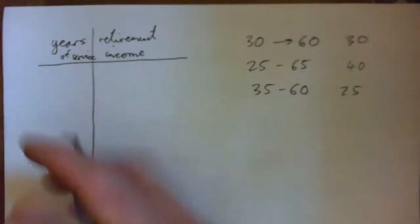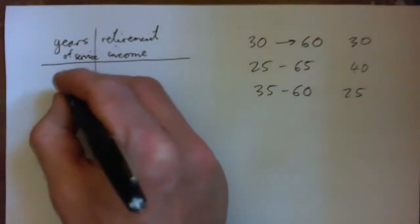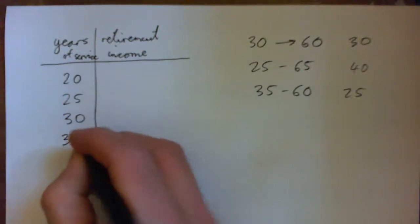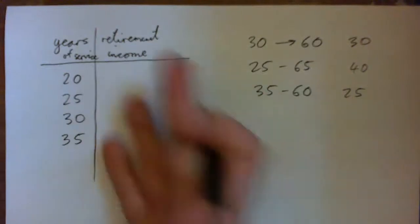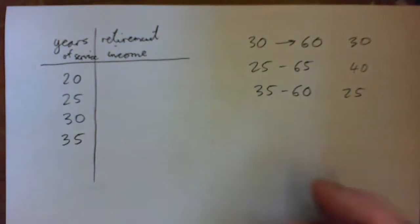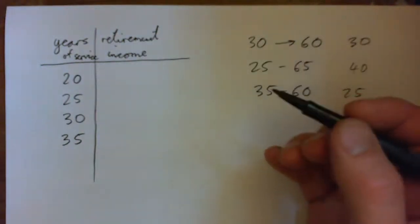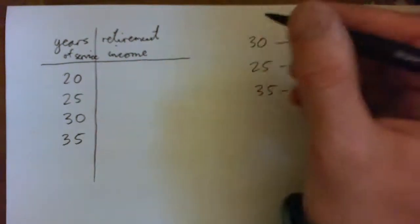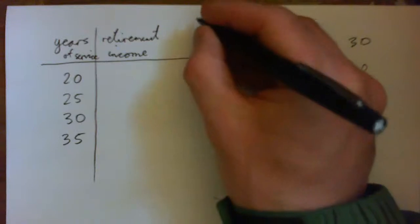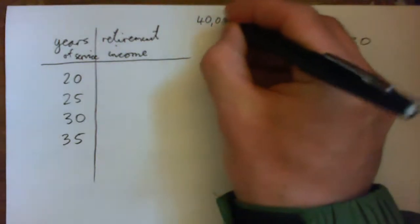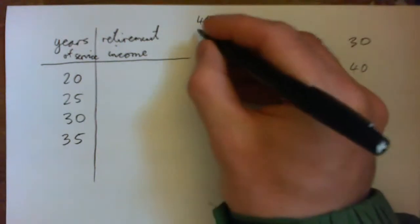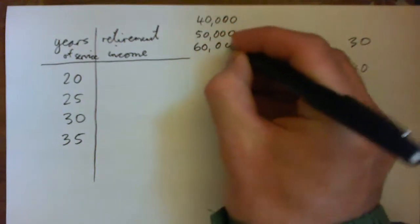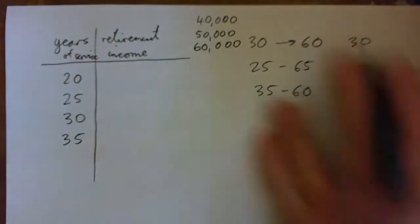So what if you had say 20 years of service, 25 years, 30 years, 35 years, something like that. So these are going up in fives and we'll do some retirement income. And again we have to make it up. So for a teacher they might get their average last three years salary could be 40,000, it could be 50,000, it could be 60,000, something like that sounds reasonable. I'm gonna pick 50,000.